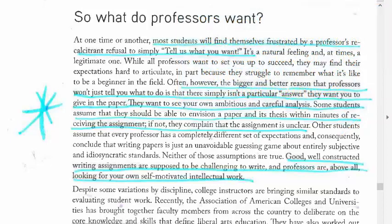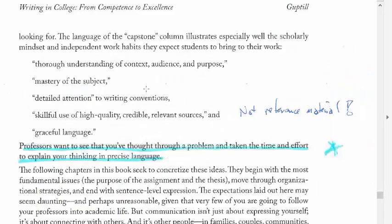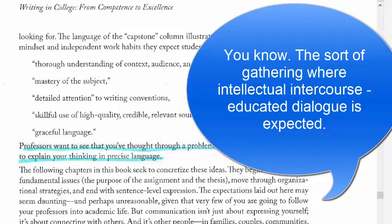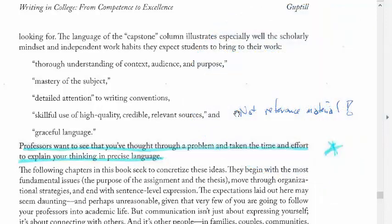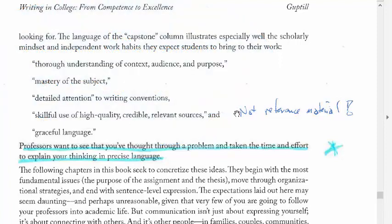We're seeing today the consequences of not teaching people how to think and discouraging critical thought. People who don't think critically are easier to manipulate, and that's not a good thing. Good, well-constructed writing assignments are supposed to be hard, and professors are looking for your own self-motivated intellectual work. I want the skillful use of high-quality, credible, relevant sources. Wikipedia is not that. Citing Wikipedia in a college paper is like going to a fancy cocktail party and announcing that you pee in the shower — maybe everybody does it, but you don't say it out loud. Encyclopedias and textbooks are places to start, not to cite.